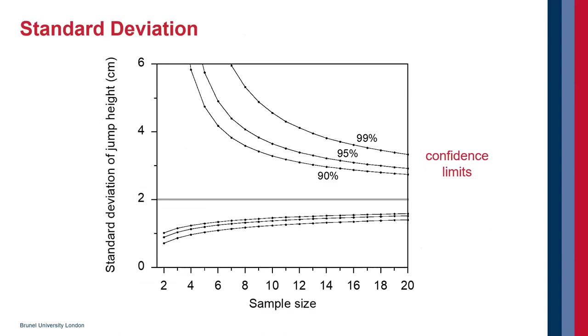Here's a visual representation of how the standard deviation depends on sample size. In this particular example, we had a jump height of 40 centimeters, but here we've got a standard deviation in the jump height of two centimeters. And again, we have curves of how the confidence limits depend on sample size. This does what we expect: the more samples you take, the better you know the standard deviation.